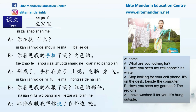Now I will read this conversation one last time. 在家里。你在找什么？你看见我的手机了吗？白色的。别找了，手机在桌子上呢。电脑旁边。你看见我的衣服了吗？红色的那件。那件衣服我帮你洗了，在外边呢。